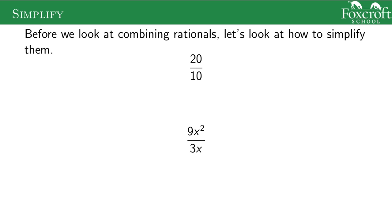Before we look at multiplying and dividing rationals, we're going to look at how to just simplify them. Just like we would with 20 over 10 — we'd say 20 is 2 times 10, and 10 is 1 times 10. We can cancel out those common factors. There's multiplication on the top and bottom, so you can cancel those out, and this thing is 2 over 1, which is 2. So 2 is simpler than 20 over 10.